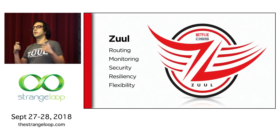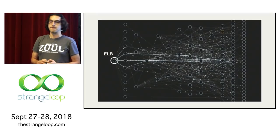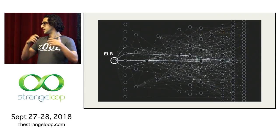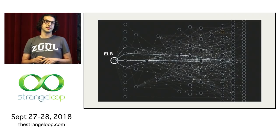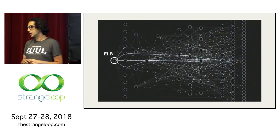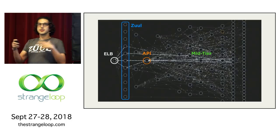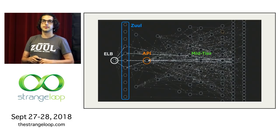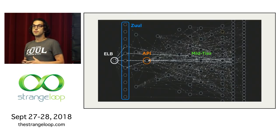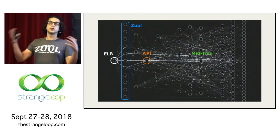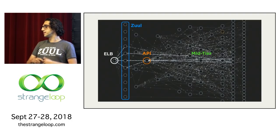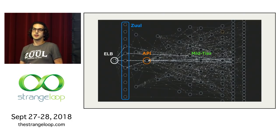We have a lot of microservices. You may have seen this picture before — this is a map of our streaming-related microservices only, not all the other stuff we do. This is the flow of traffic among them. It comes from the internet through the ELBs, goes through multiple Zuul clusters, which route traffic to our back-end services — mainly our API — and then to our mid-tiers.